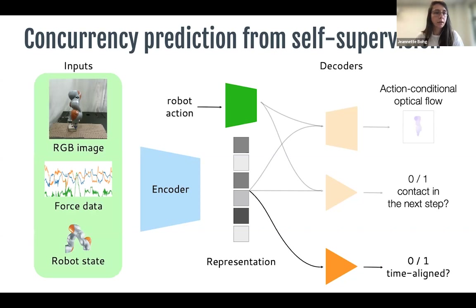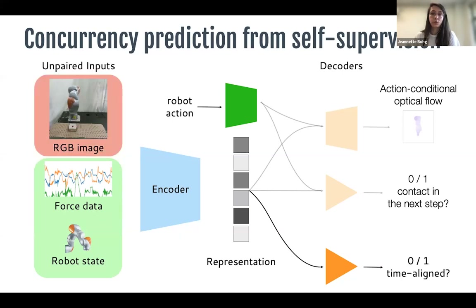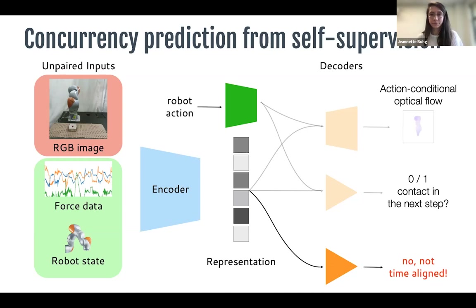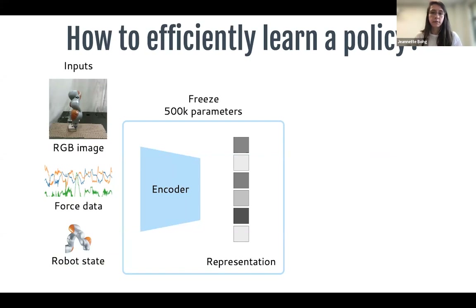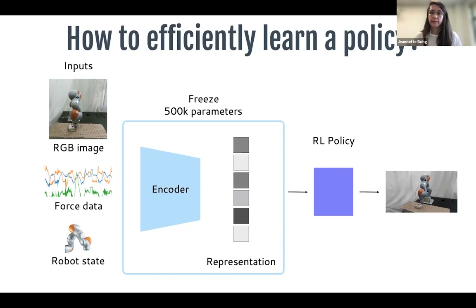Our third self-supervised source learns the complementary relationship between modalities through predicting temporal concurrency. From our representation, the network predicts if input modalities are time-aligned. Given paired inputs from the same time step, the network predicts yes — they are aligned. If an image from a different time step is used, the inputs are unpaired and the network predicts they are not aligned. This encodes multimodal sensor concurrency and redundancy.